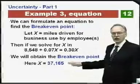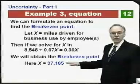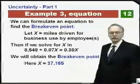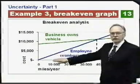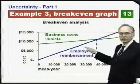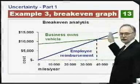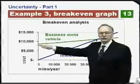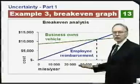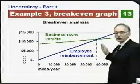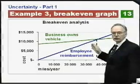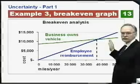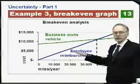If the employer expects employees to drive more than 37,000 miles per year, it would be better to buy the car and pay all costs. Otherwise, let employees drive their own cars and reimburse them $0.30 a mile. A graphical representation shows the two cost lines intersecting near 37,000 miles — that is the break-even point for this example.